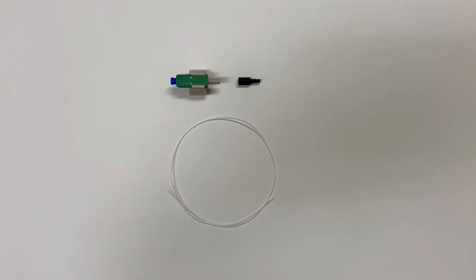This video demonstrates step-by-step termination instructions for the AFL SCA fast connector on 250 micron fiber. The fast SCA connector kit contains the following items: a 100 micron boot, clear protective tubing, and a fast SCA connector.